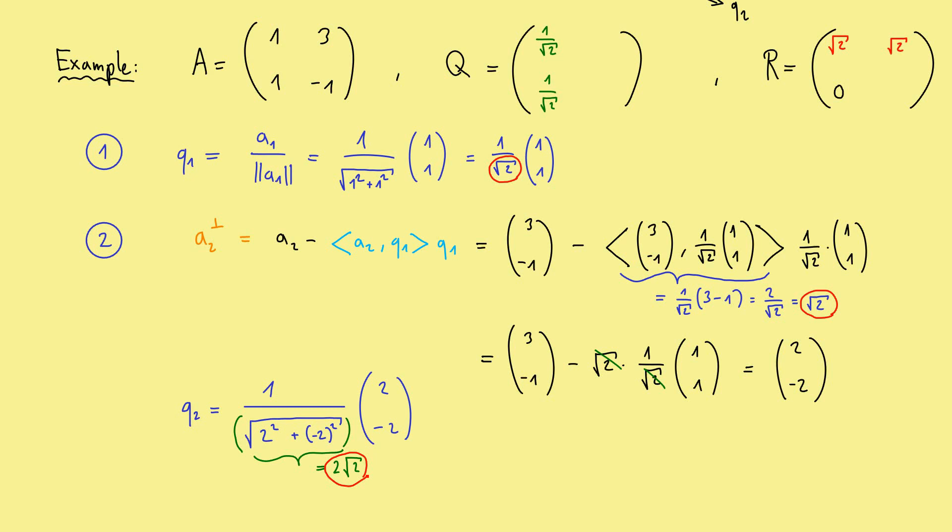And again, this number is what we have to put in into R. And here we find it. Okay, and then also our Q2 looks very nice. It's 1 divided by the square root of 2, and 1 and minus 1. And of course, we can put that into the matrix as well. So, 1 divided by the square root of 2, and here minus the same thing.